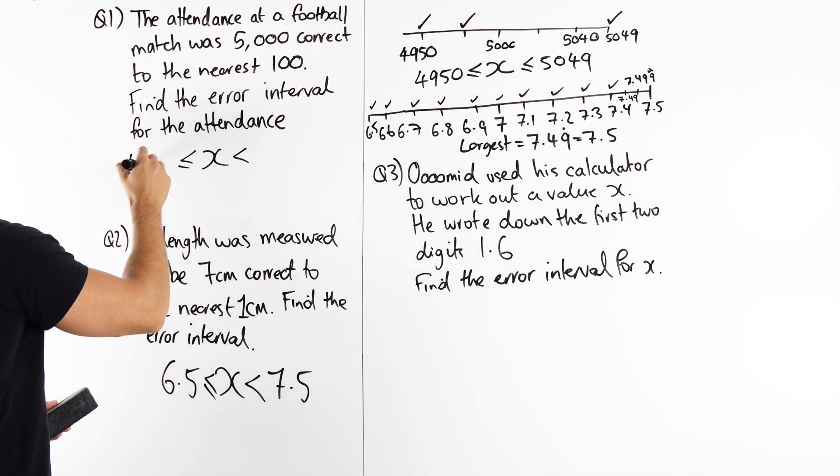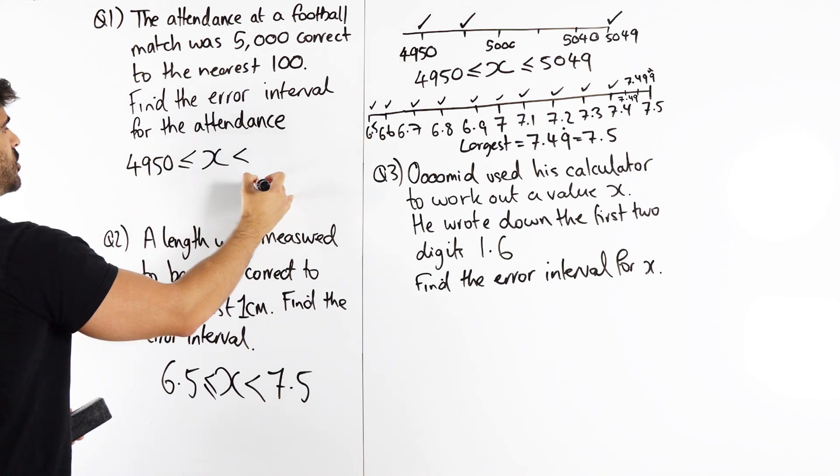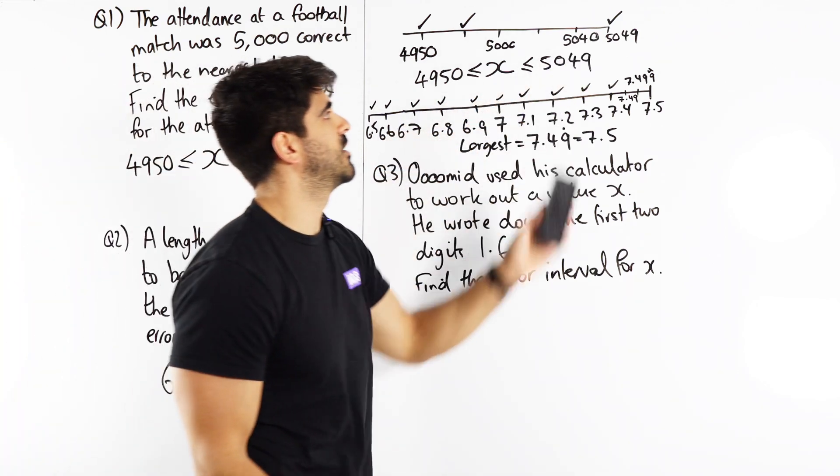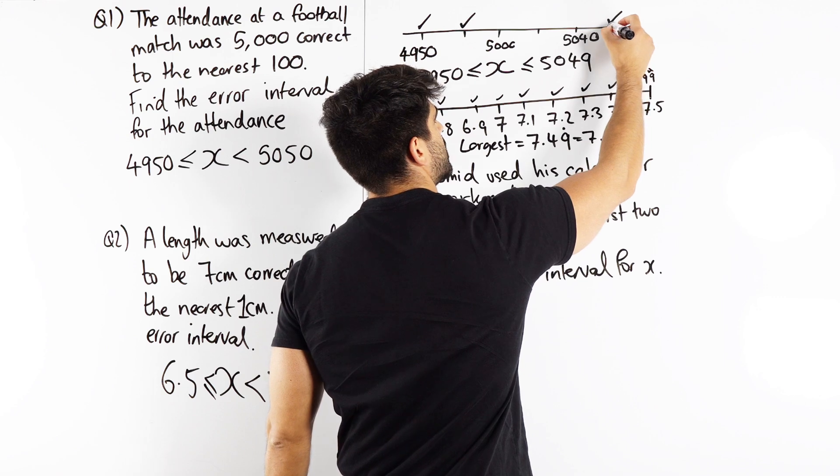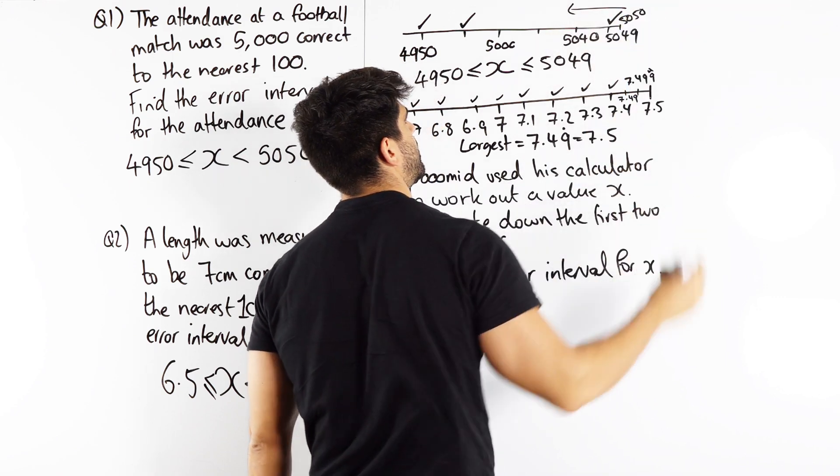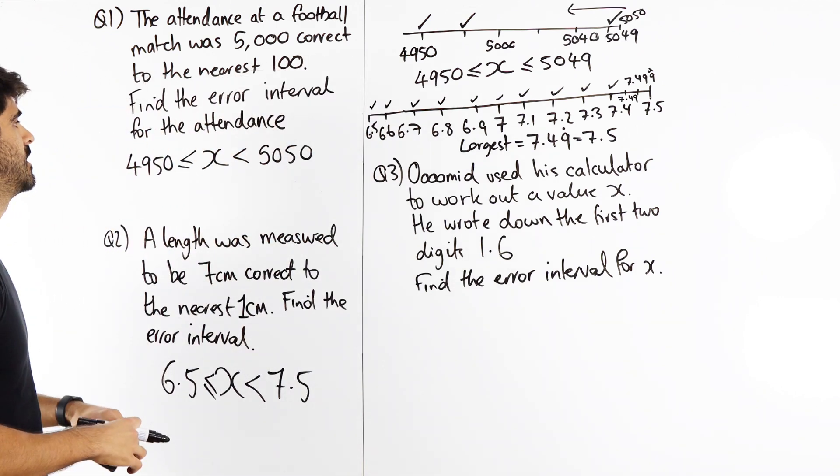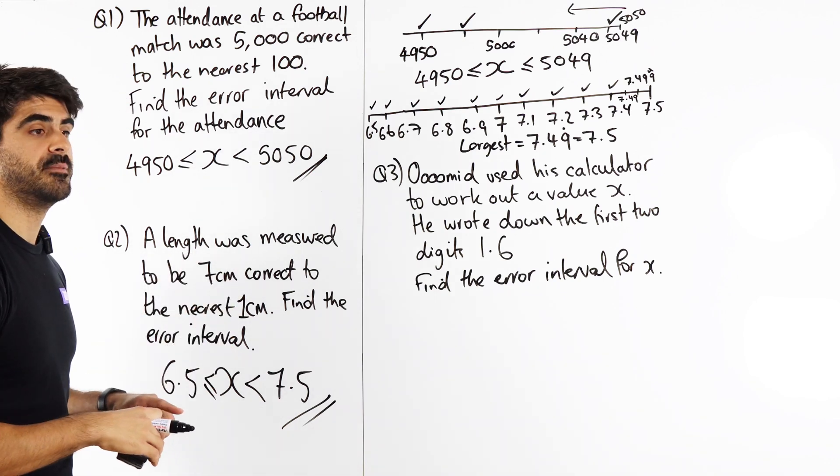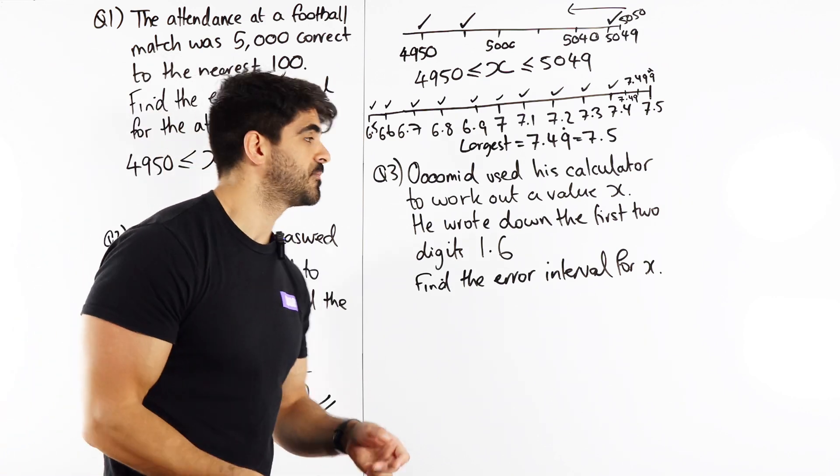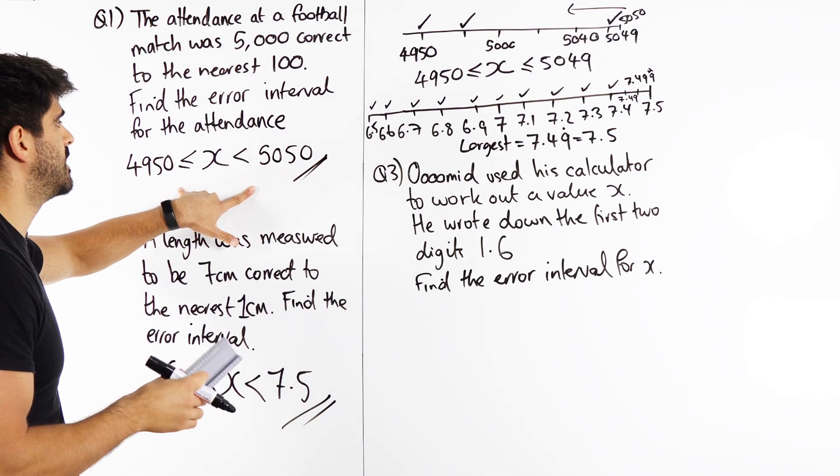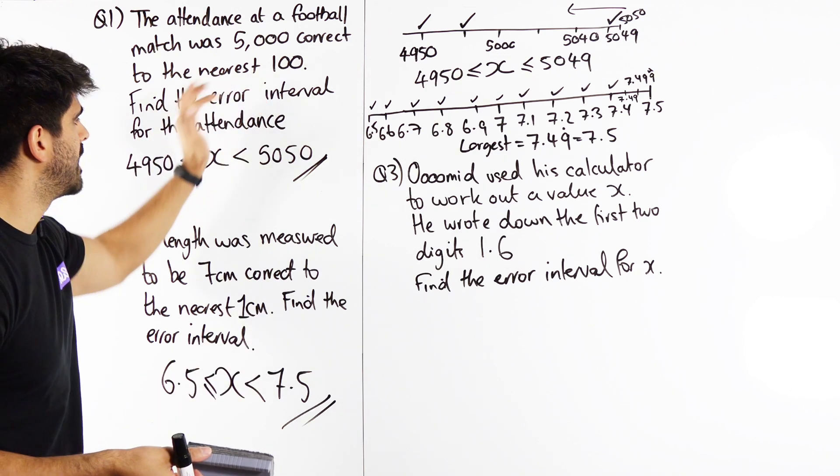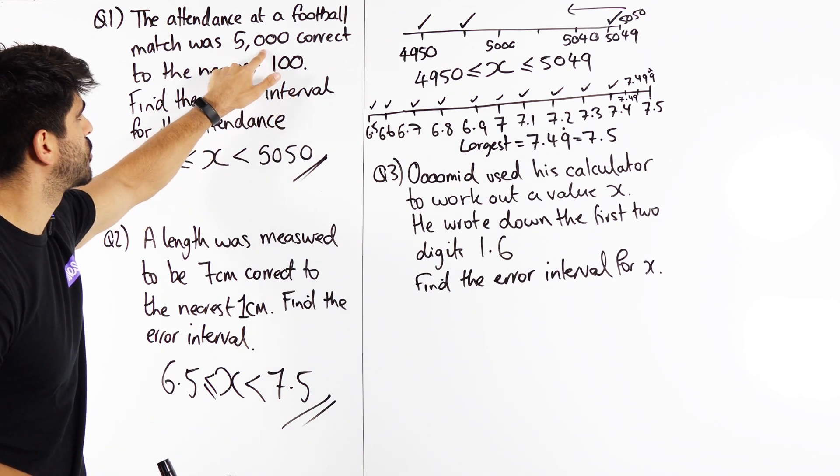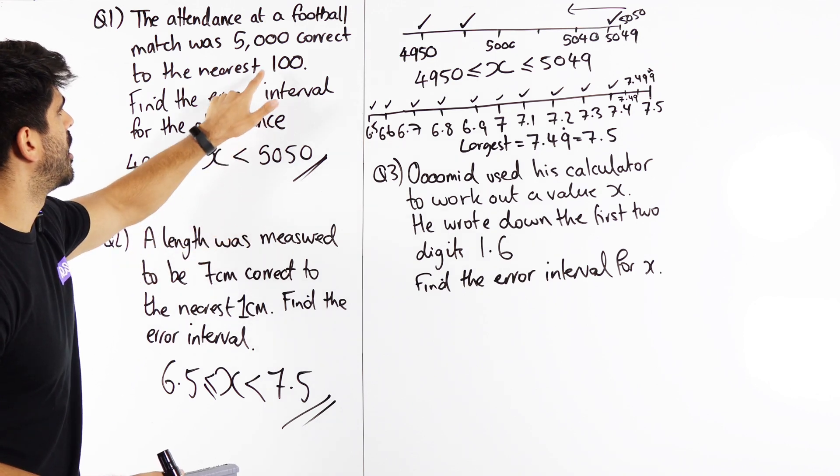So if the lower is 4950, when you add 100, you get 5050. So if we go back to this, we say look, yes that's the largest integer, but instead of doing that we do 5050 and say anything less than that would round to 5000. And that would be our final answer for both of them, which actually lets us do error intervals very quickly. Because if this gap needs to be the size of what you're rounding to and it's symmetrical, if you take your error divided by 2 and you add and subtract from this, you get your answer.